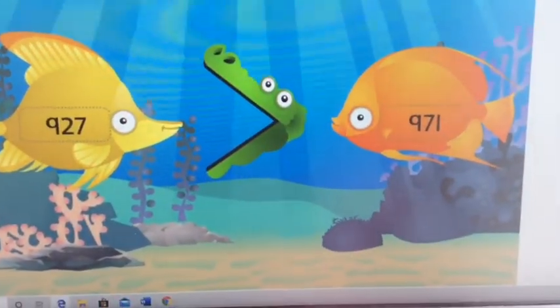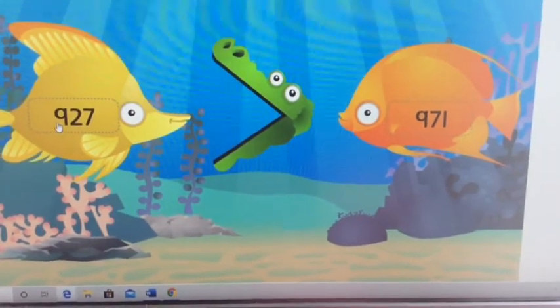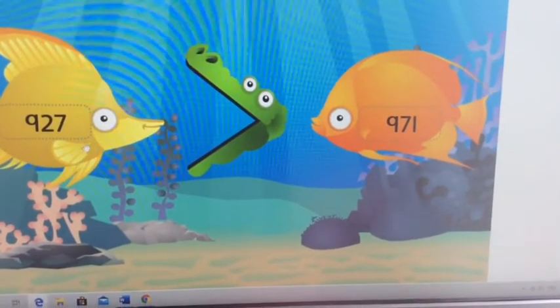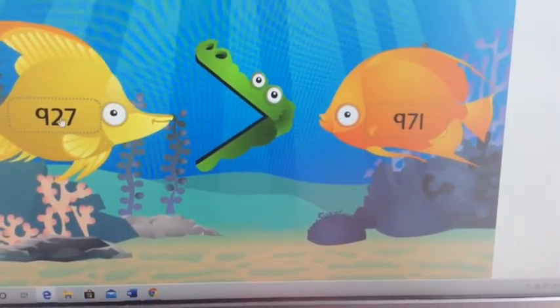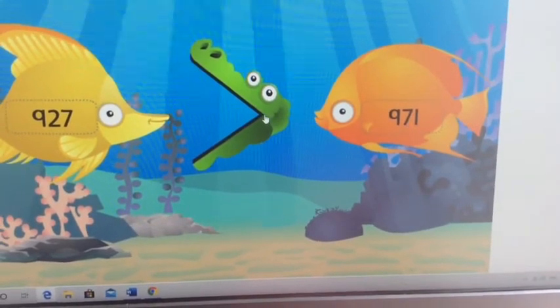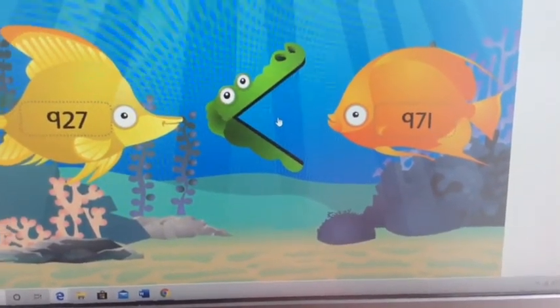How would you do this one though? Look, the hundreds are the same - 900 here, 900 there. If your hundreds are the same, look at the tens. So two tens here but this is bigger, seven tens. So he would eat that number.